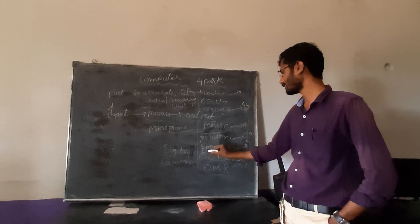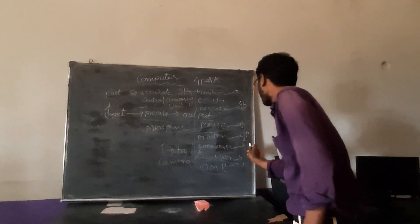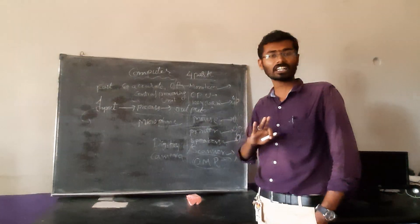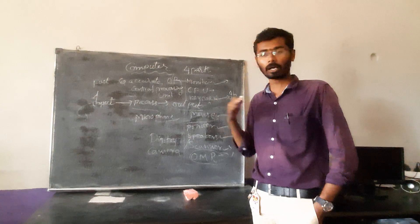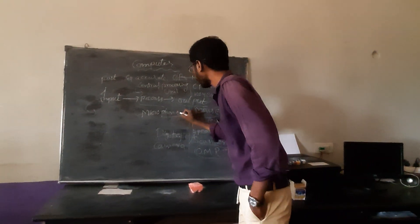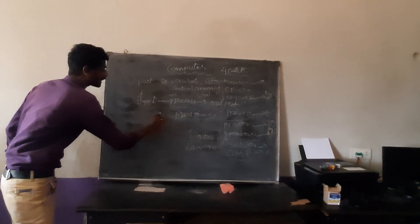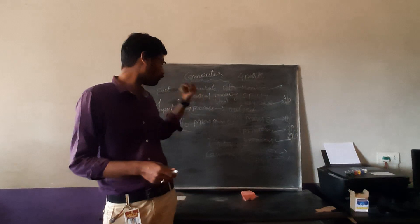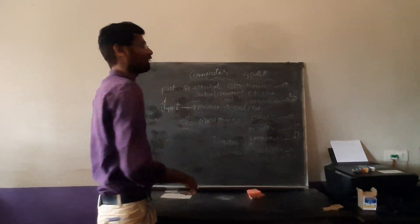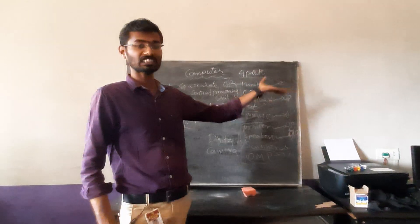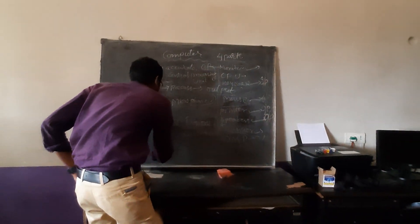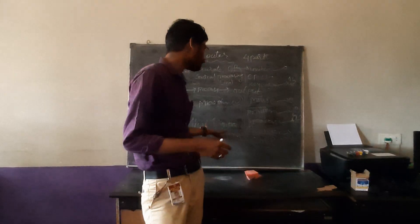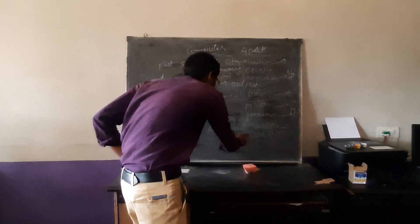So the printer is an output device. Speakers are an output device — we use audio files in the computer through speakers. If we use the microphone, the microphone is an input device. The scanner and digital camera are also input devices — we use them to input data into the computer. OMR is also an input device.